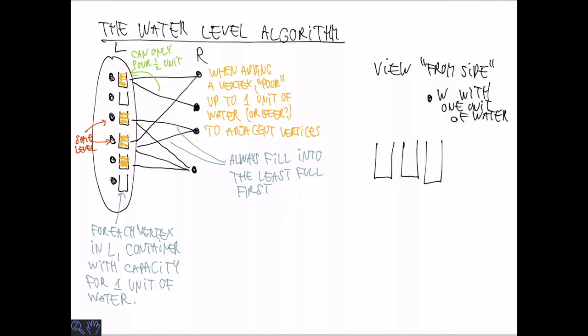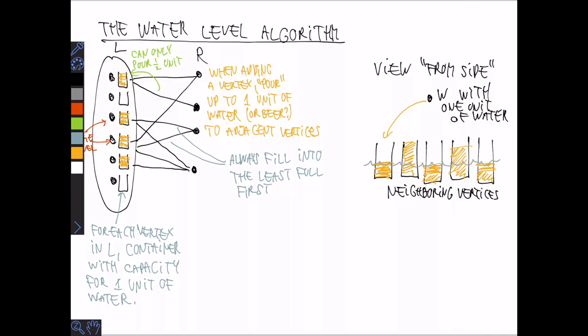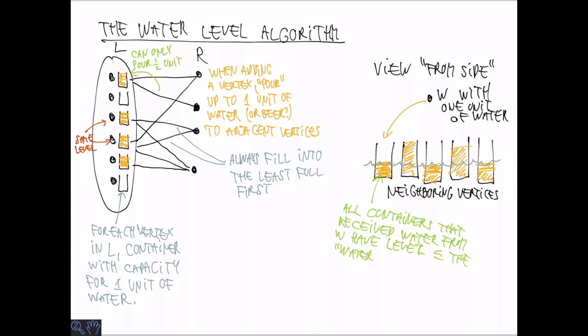So this is the water level algorithm. It is instructive to also have a look at it from the side, so to speak. So if we think about a vertex W with one unit of water, and look at all the neighboring vertices. When we start, they might have different levels of water in them. And now we are going to pour first in the empty neighbor. When it is as full as another neighbor, we start pouring in several at the same time. And at the end, all the neighbors that we have poured to are going to be at the same level. So this is the water level, so to speak. So all containers that have received water from W are going to have the same level, which is less than or equal to or actually equal to the water level. So if there is some container with a higher level, let's call it YV, it won't have received any water. And in particular this means that all the neighbors that received water have a level less than or equal to YV at the end of the pouring from W.